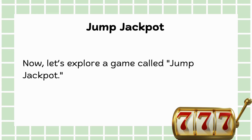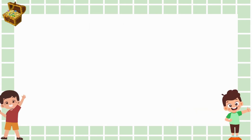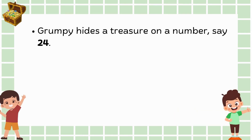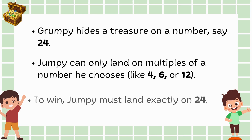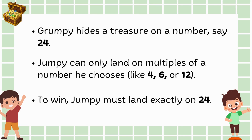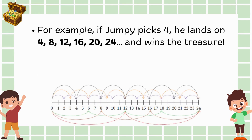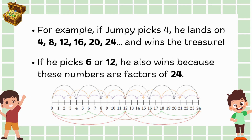Now, let's explore a game called Jump Jackpot. In this game, Grumpy hides a treasure on a number, say 24. Jumpy can only land on multiples of a number he chooses, like 4, 6 or 12. To win, Jumpy must land exactly on 24. If Jumpy picks 4, he lands on 4, 8, 12, 16, 20 and finally 24, winning the treasure. If he picks 6 or 12, he also wins because these numbers are factors of 24.